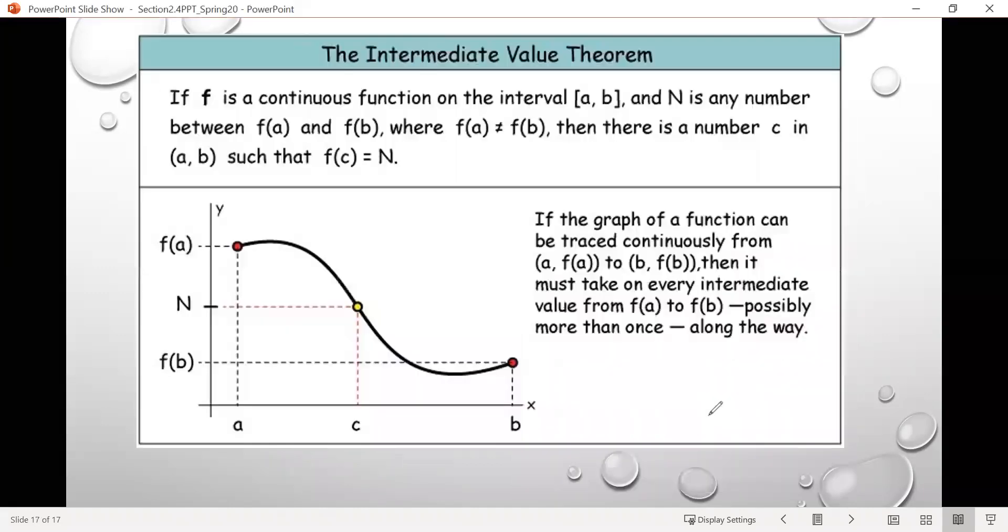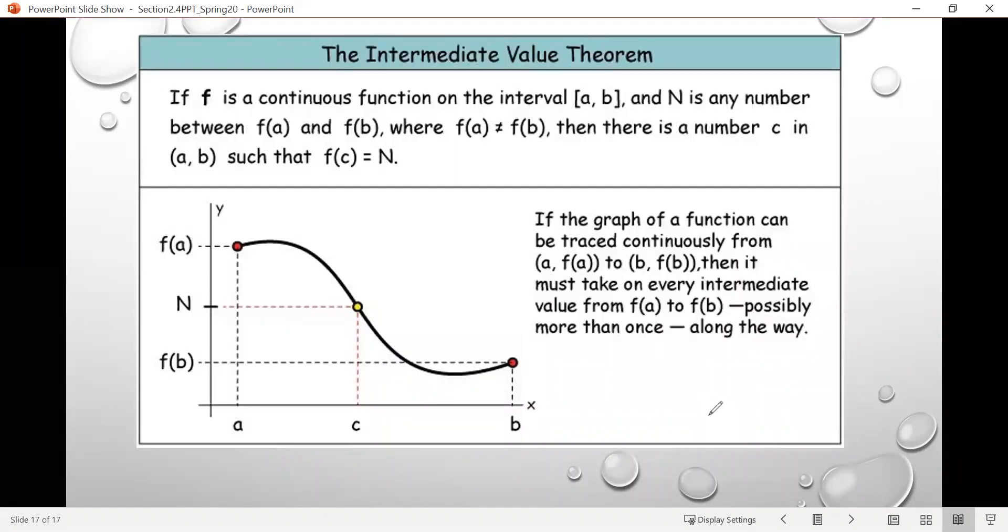And so what we just saw is an example of what's called the intermediate value theorem. So the intermediate value theorem tells us that if f is a continuous function on some interval, meaning that there's no breaks in the function along that interval, and n is some number between the output values for each of those endpoints. So between f of a and f of b. And we also have this added part that f of a cannot equal f of b. Then there's some number c in the interval between a and b such that f of c equals n. And I like this visual here that shows why that is. So we see here's the value a, here's the value b. Those are our two endpoints. Here's f of a and f of b. And then n is somewhere in the middle.